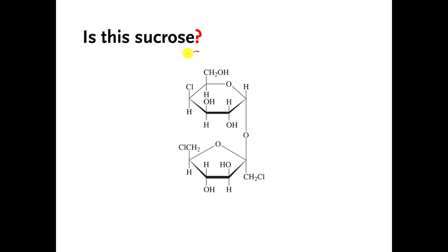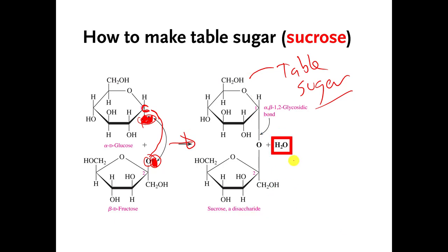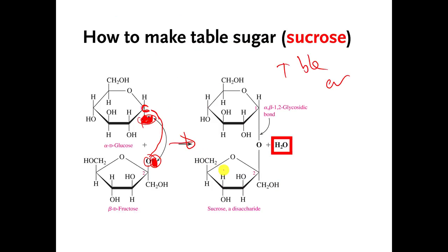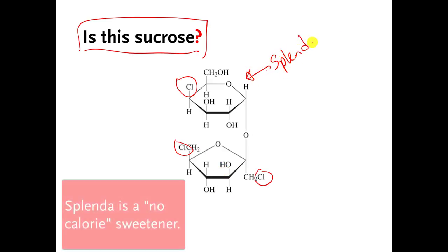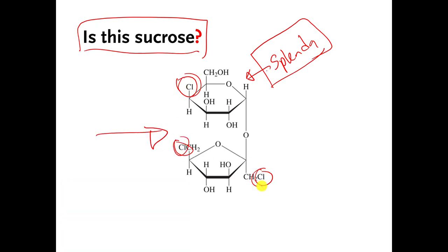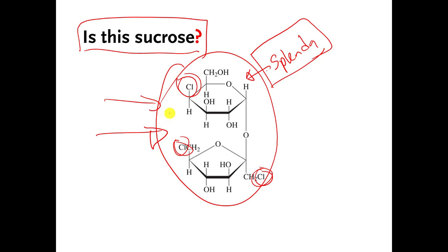Just as an aside, you can spend a minute and ask yourself: is this sucrose — is this molecule table sugar? You can compare it to the one over here. If you notice, it is almost table sugar, but there are some weird things going on — there's a chlorine here, a chlorine here, a chlorine there. Over here, no chlorines. This actually is Splenda. Splenda tastes sweet because it looks an awful lot like table sugar, but it has these other weird things on it, so it's not exactly table sugar. Your body basically looks at this and says 'that tastes sweet, but I have no idea how to break that thing apart,' which is why you don't get any calories from it.